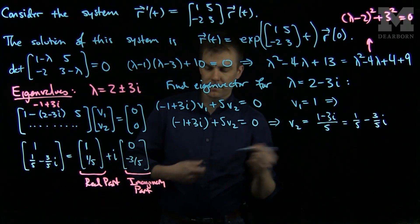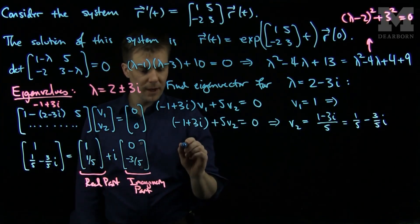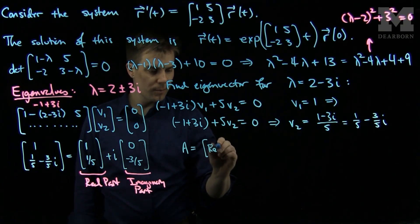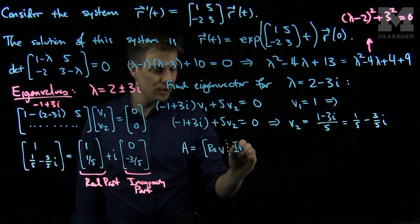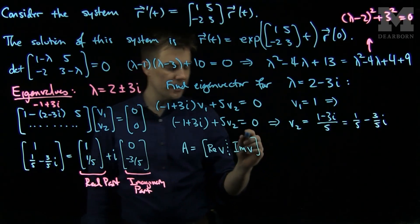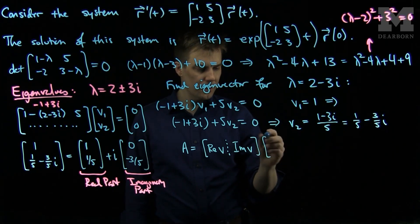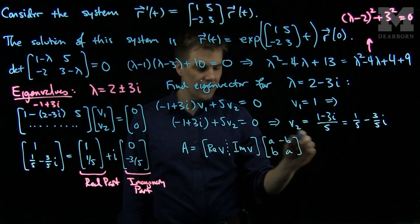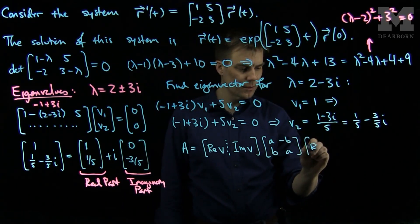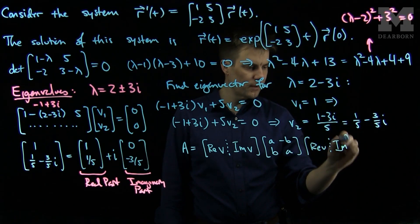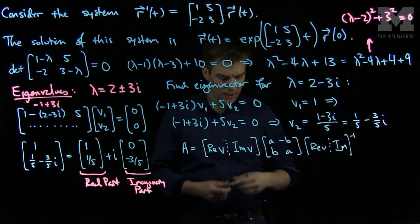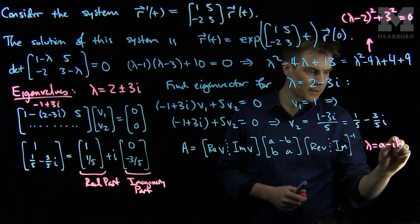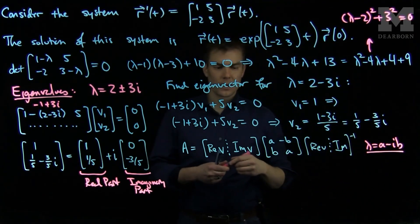Now we use the fact that a matrix A with complex eigenvalues can be written as [Re(V), Im(V)] times [[a, -b], [b, a]] times [Re(V), Im(V)]^(-1), where λ = a - ib.